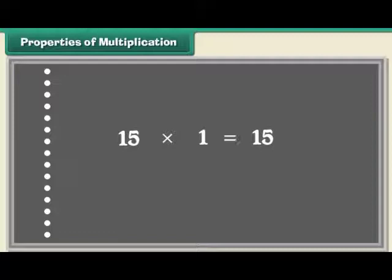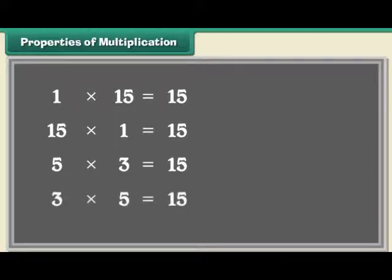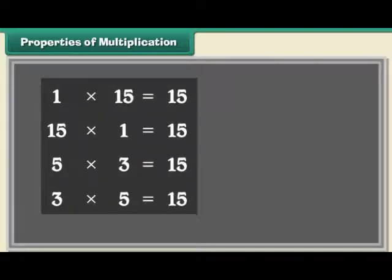Let us look at different arrangements of the 15 dots. The dots can be arranged in a single row of 15 dots. 1 multiplied by 15 is equal to 15. The dots can be arranged in 15 rows of 1 dot each. The dots can be arranged in 5 rows of 3 dots each. 5 multiplied by 3 is equal to 15. 15 multiplied by 1 is equal to 15. 3 multiplied by 5 is equal to 15. These are called multiplication facts.